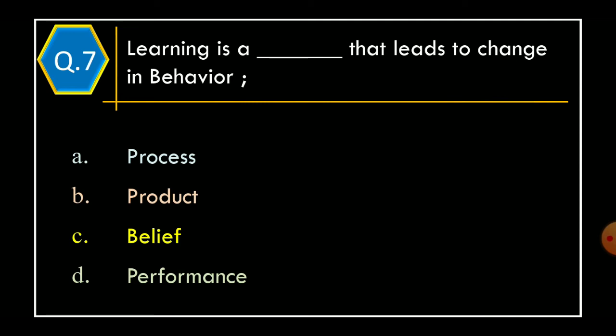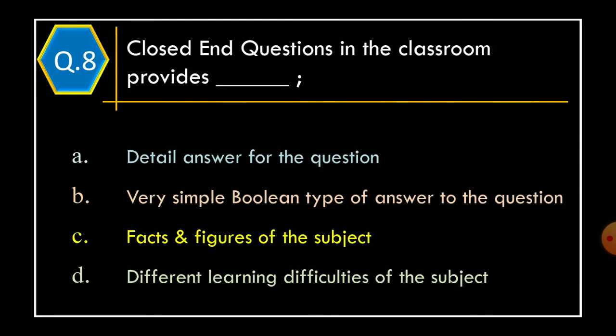Question 8: Closed-end questions in the classroom provides _____. Option A: Detail answer for the question. Option B: Very simple boolean type of answer to the question. Option C: Facts and figures of the subject. Option D: Different learning difficulties of the subject. The correct option is Option B, very simple boolean type of answer to the question.